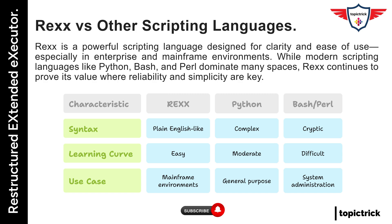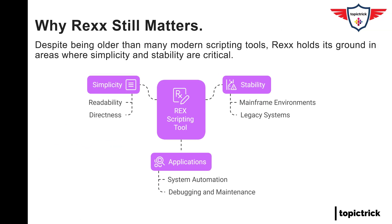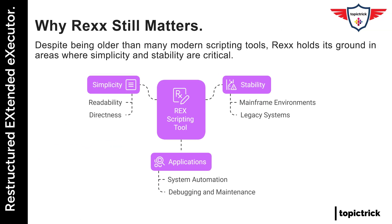Of course, every language has its place. Python is great for modern web and data work. PowerShell fits nicely into Windows environments. Bash rules in Unix-based systems. And Rex? Rex continues to shine in mainframe environments where reliability, clarity, and ease of maintenance are essential. That's why big enterprises still rely on it for automating workflows on systems like IBM Z/OS.